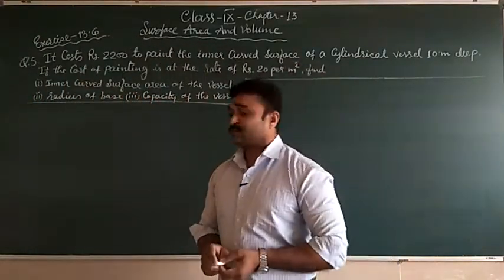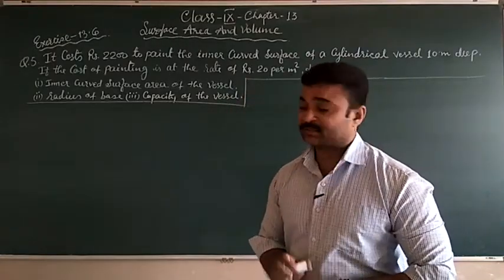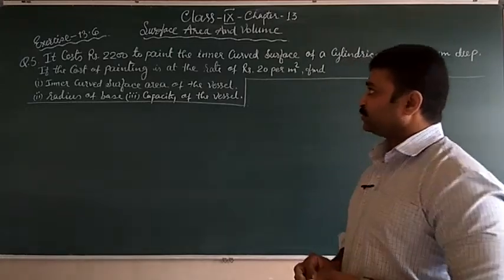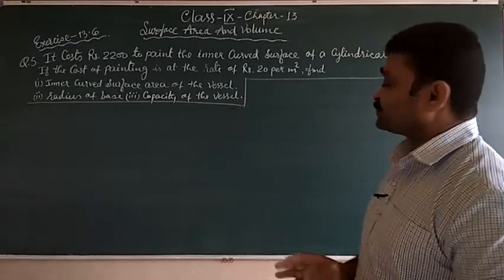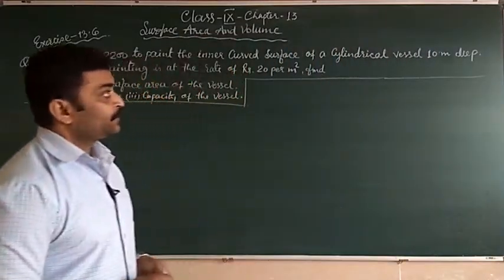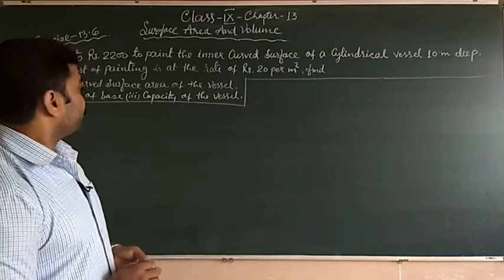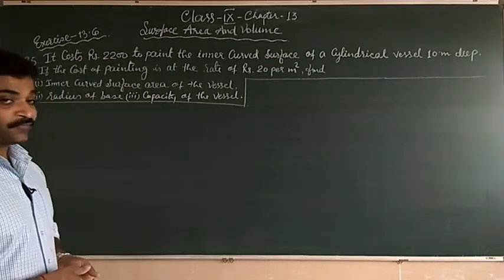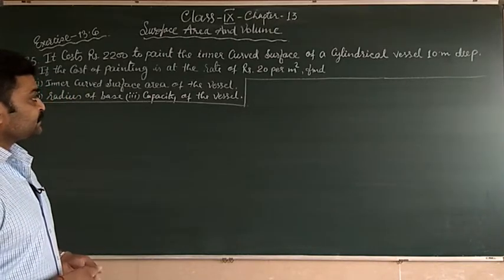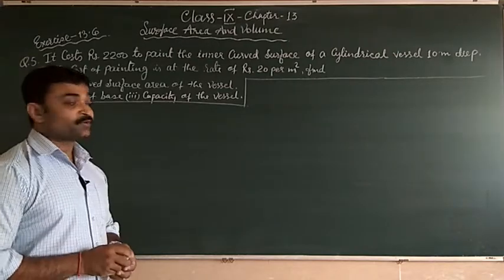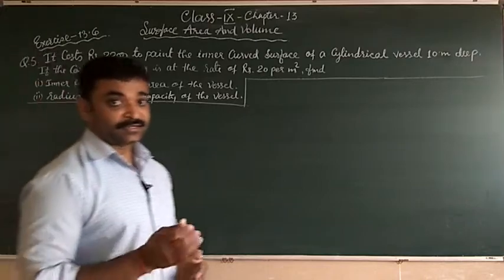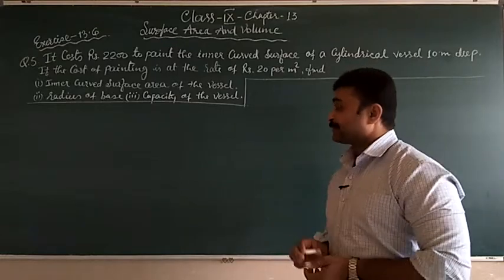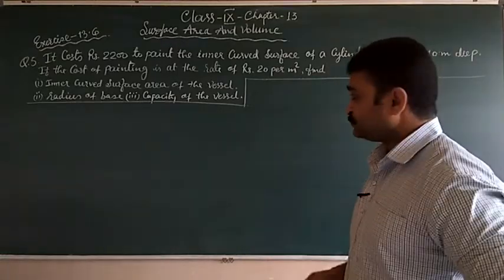Students, now we are going to solve question number 5 of exercise 13.6. In this question, it costs Rs 2200 to paint the inner curved surface of a cylindrical vessel 10 meter deep. If the cost of painting is at the rate of Rs 20 per meter square, then find the inner curved surface area of the vessel, radius of the base, and capacity of the vessel. Three things you will have to find: first, curved surface area of the vessel; second, radius of the base; and third, capacity, that is volume of the vessel.